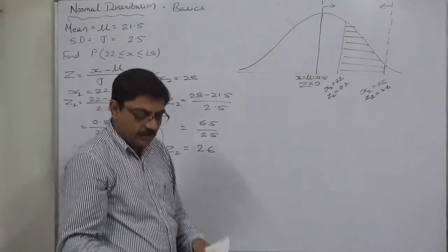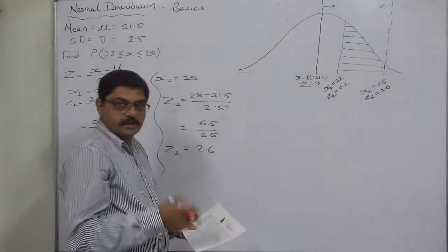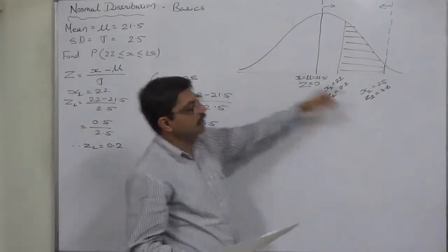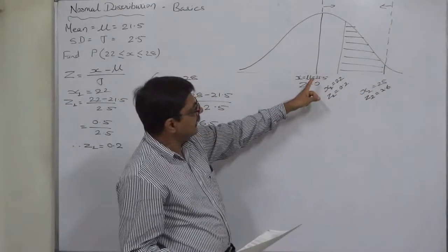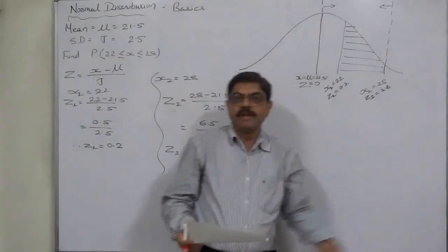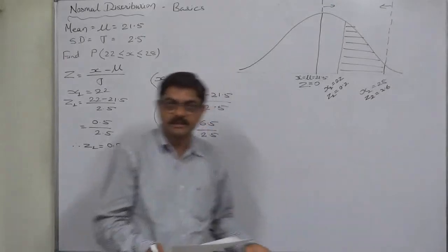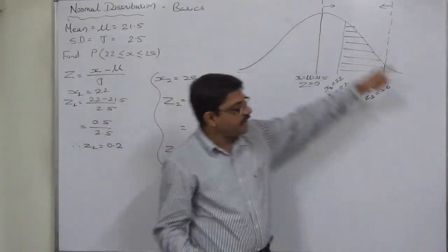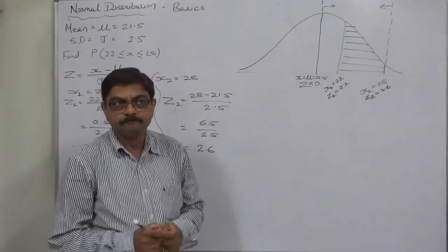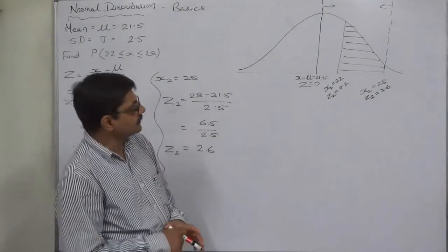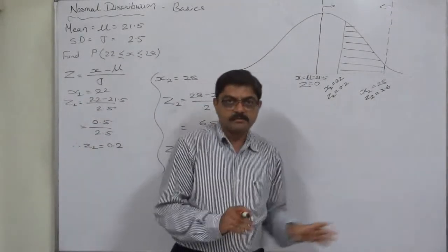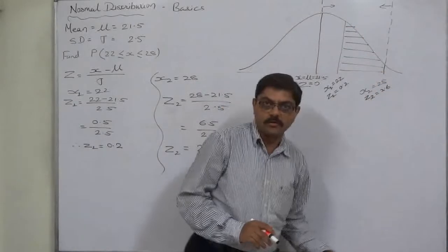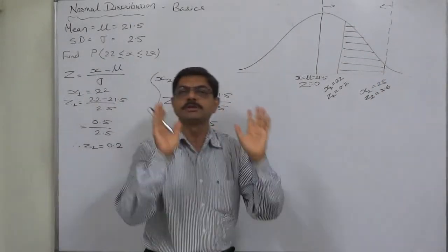Now let's use the table — you can also find tables from available online sources. There are two kinds of tables: one showing the total area under the curve and one showing the area of half the curve. The second type is very easy to use, especially for beginner students. I prefer the second kind of table which shows the area under half the curve.